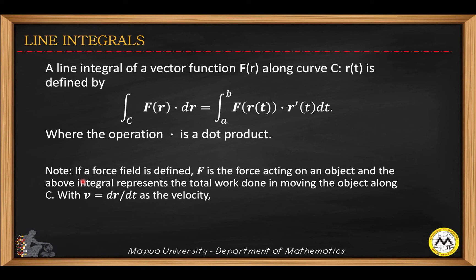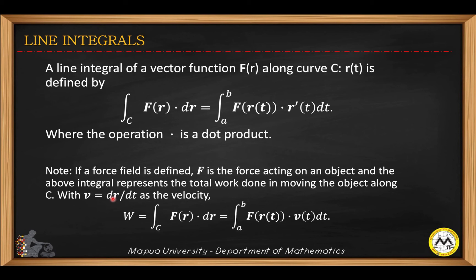Note that if a force field is defined — vector f is the force acting on an object — the above integral represents the total work done in moving the object along a curve c. Vector v is the derivative of r with respect to t, so r is the position vector. Therefore, the work done equals the integral of f(r) dr along c, which is the integral of f(r(t)) dot v(t) dt, because the first derivative of r is the velocity.